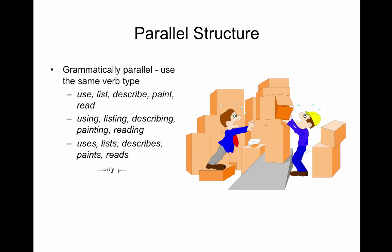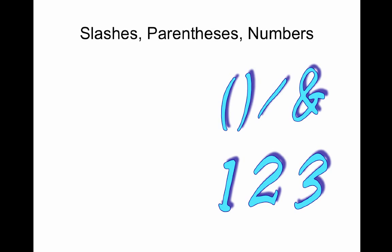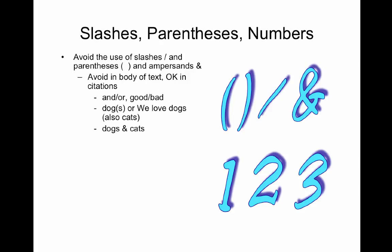To be conceptually parallel, use the same classification level — for example, functions versus task versus subtask, or like in an outline, Roman numeral level versus ABC level versus small Roman numeral level. Avoid the use of slashes, parentheses, and ampersands in the body of the text, but it's okay in citations. Parentheses and slashes can cause people to be confused or have to read several times to get the meaning, so you want to avoid parenthetical statements altogether.